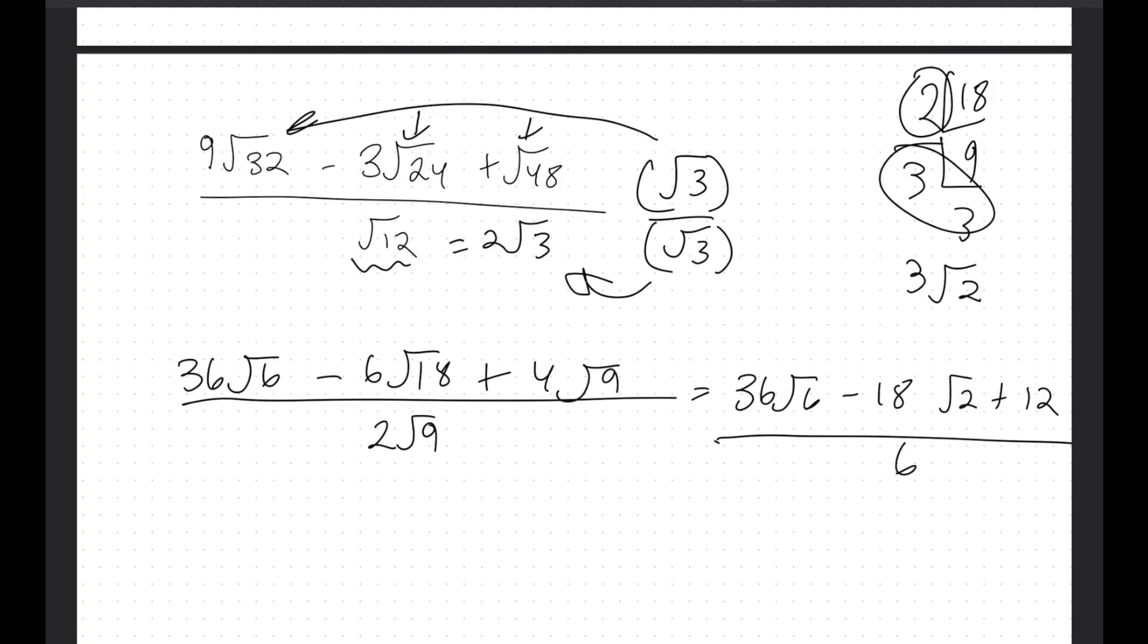And let's see if there's anything else we can do to simplify. 36, 18, and 12 are all divisible by 6, so I'm going to factor out a 6, leaving us with our final answer of root 6 minus 3 root 2 plus 2.